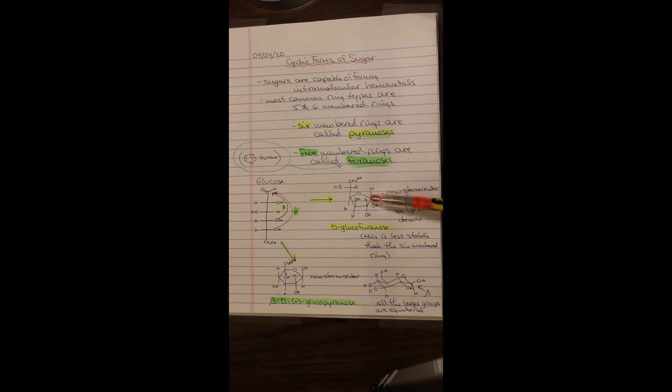This furanose is less stable than the six-membered ring, and you'll see why for glucose in just a moment. If the hydroxyl group in the D position closes and forms the hemiacetal, this forms D-glucopyranose. And of course, once again, there's a new stereocenter here. This hydroxyl group can be up or down. In this case, it happens to be up.